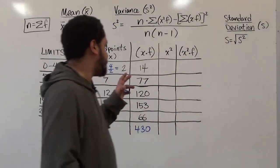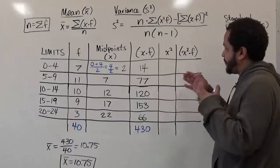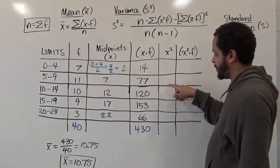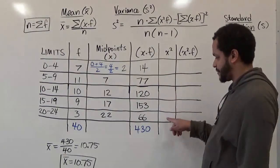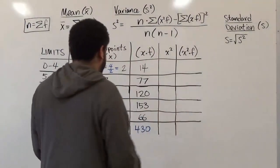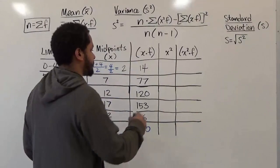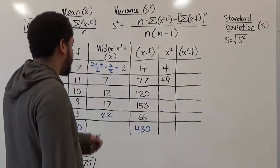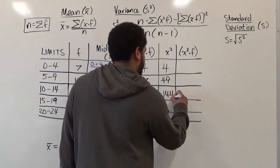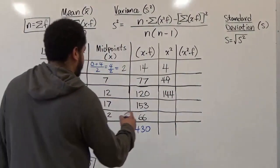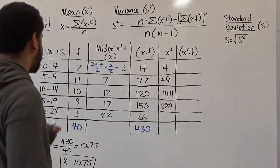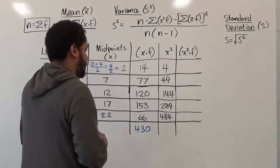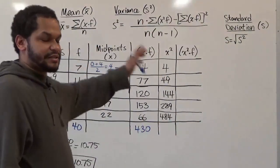Next we have to make the x² column by taking the midpoint values and squaring them: two squared, seven squared, twelve squared, seventeen squared, and twenty-two squared. Two times two gives us four. Seven times seven is forty-nine. Twelve times twelve is one hundred and forty-four. Seventeen times seventeen is two hundred and eighty-nine. Twenty-two times twenty-two is four hundred and eighty-four. There's no need to sum this column, so let's move to the next step.